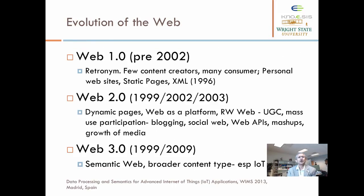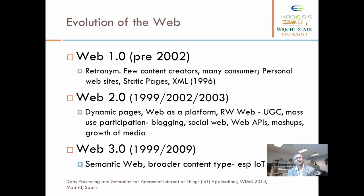As the web evolved, people classify it as Web 1.0, 2.0, and 3.0. Web as it was before 2002 is retro-named Web 1.0 — nobody called it Web 1.0 at the time. When the term Web 2.0 came in vogue, people started calling what came before it Web 1.0.